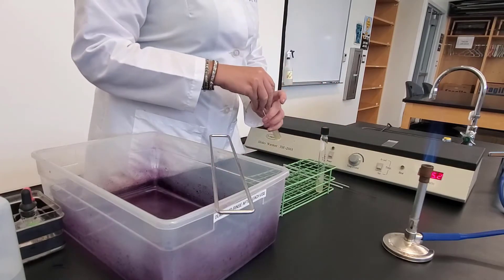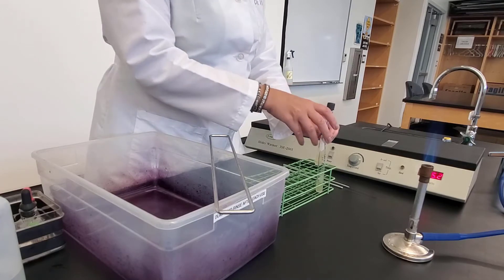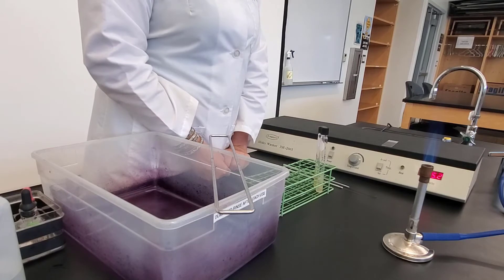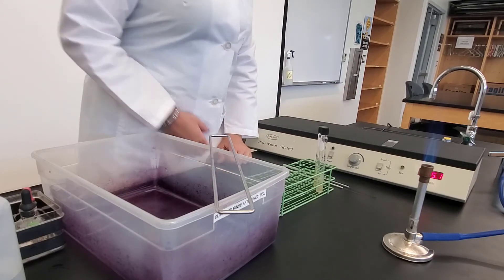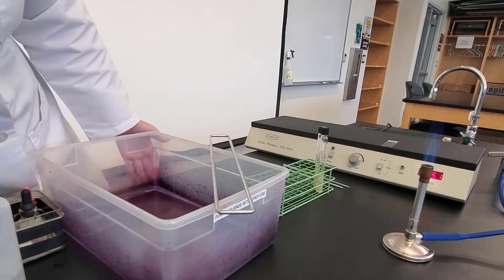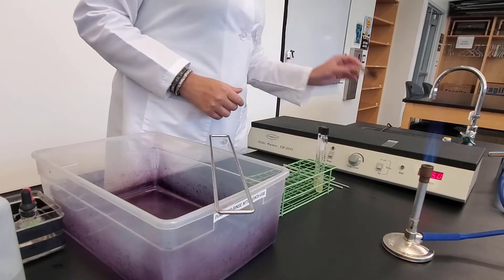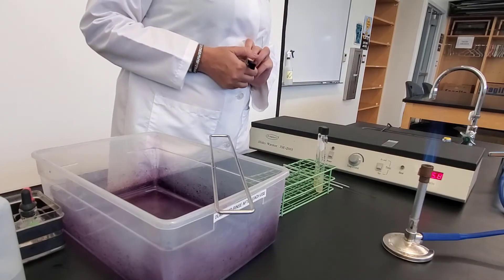So what I'm doing now is I'm letting my slide air dry. And then the next thing I need to do is that I need to heat fix my slide. And so to do this, I'm going to get a slide clip. And so when this is dry, I'm going to put my slide on my slide clip, and I'm going to do three passes through the flame.